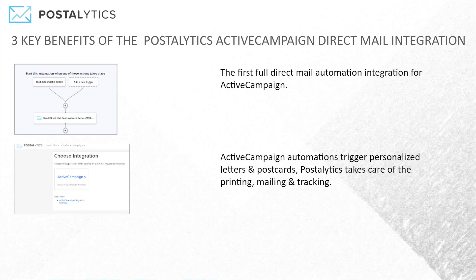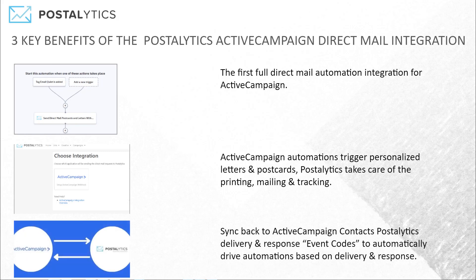We take care of all the printing, mailing, and tracking. We present all that data back to you in a dashboard, and we can sync that data back into ActiveCampaign contacts. You can then take the delivery information and trigger another email to go out, or use the response information to have a sales rep pick up the phone.